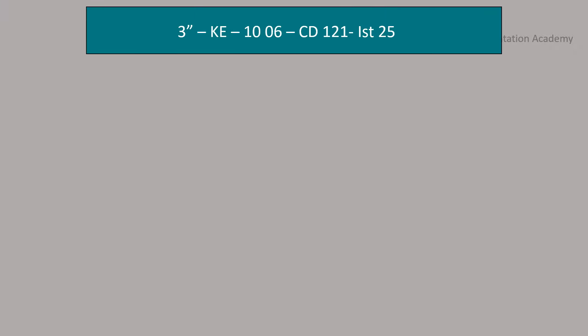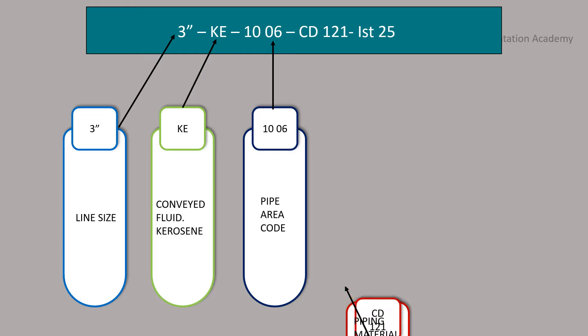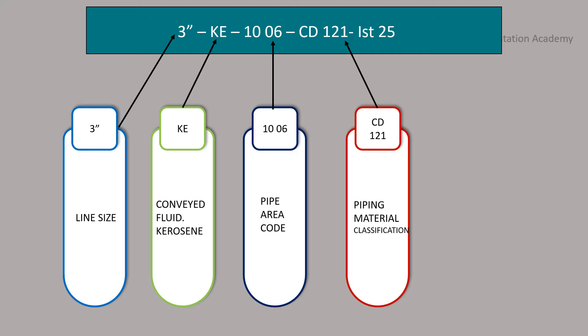Now let's see an example of line number. In this line number, three represents line size. KE represents conveyed fluid. 1006 represents area code. CD121 represents piping material classification and the last part represents insulation type and size.